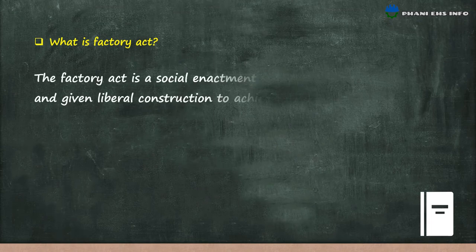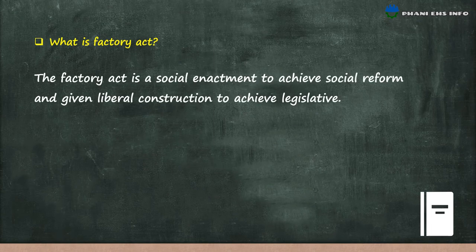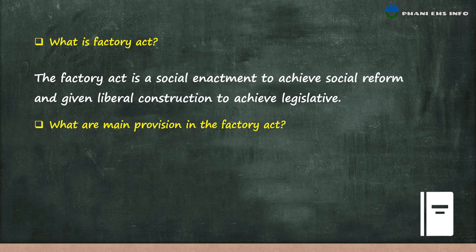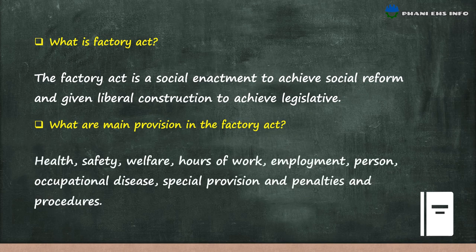The Factory Act is a social enactment to achieve social reform and give liberal construction to achieve its legislative intent. The main provisions of the Factories Act are: health, safety, welfare, hours of work, employment of persons, occupational disease, special provisions, and penalties and procedures.